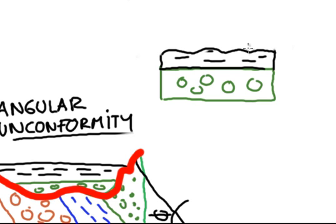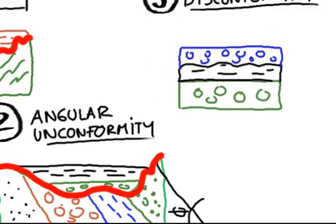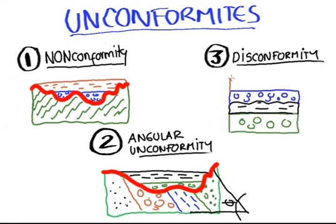So over this layer, new sediments are deposited, forming new layers of rocks, and this surface between these two sequences of sedimentary rocks is what we call disconformity.